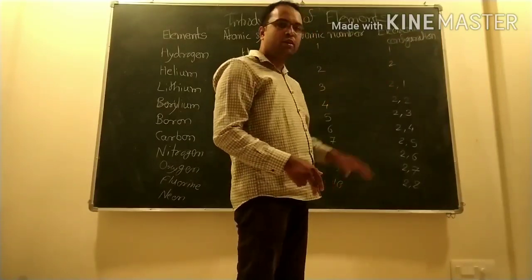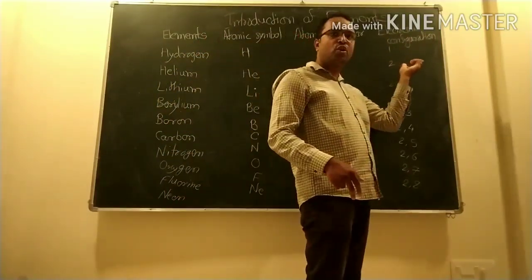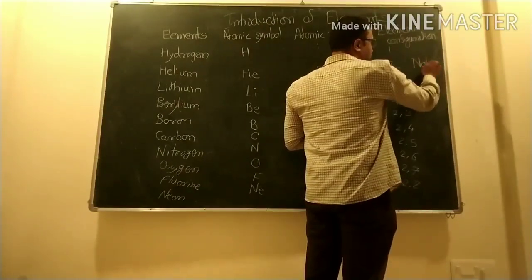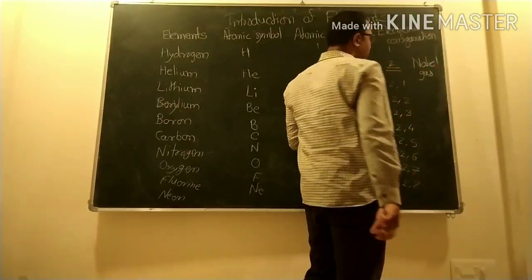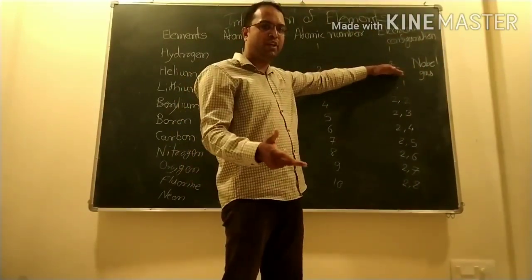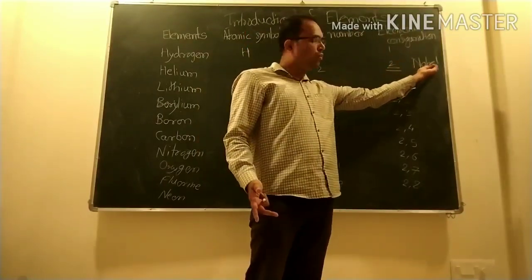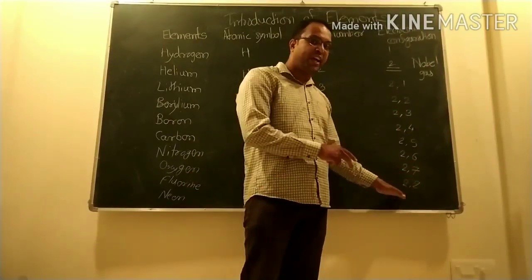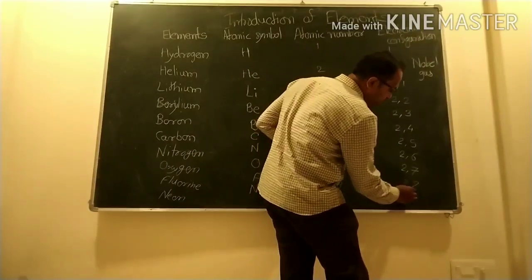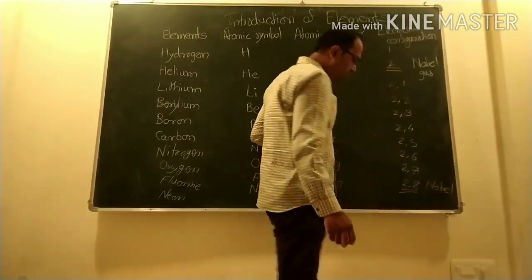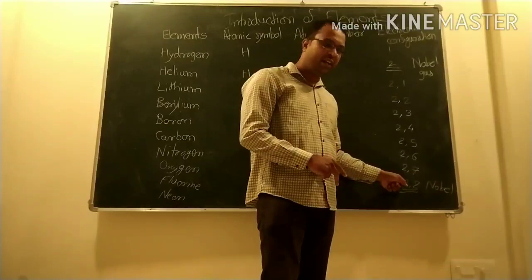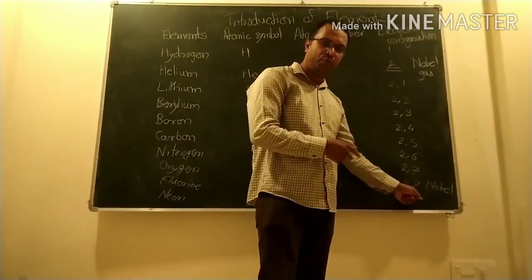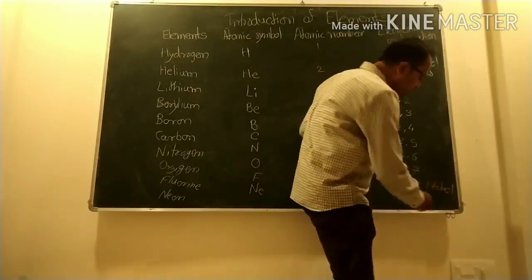Helium has 2 electrons, which completely fills the first shell, so it is a noble gas. Neon is also a noble gas: its first shell is completely filled with 2 electrons and the second shell is completely filled with 8 electrons — its capacity. So both are known as noble gases.